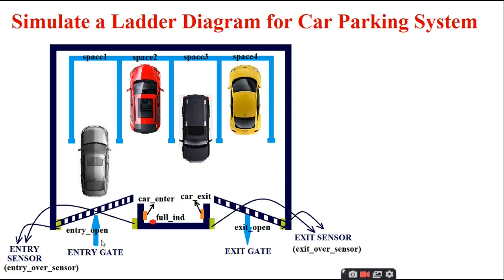Whenever a car enters the entry gate, the entry over sensor gets activated, the entry gate opens, and the car enters the parking area and parks in any one of the available spaces. There is also a car_enter switch, a car_exit switch, and a full indicator which indicates when all car spaces are full and no further entry is allowed. A car can exit at any time from the exit gate, and once the exit over sensor is activated, the exit gate opens.